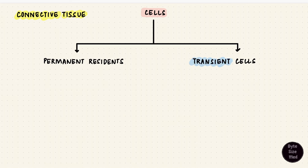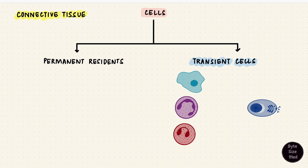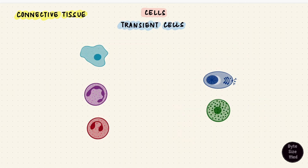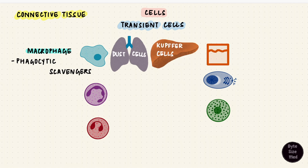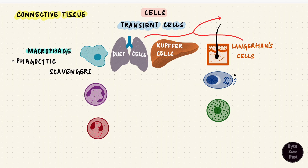The transient cells are usually immune cells — macrophages, neutrophils, eosinophils, plasma cells, and mast cells. Macrophages are phagocytic scavengers; they take up debris and foreign substances, and can have different names depending on their location. For example, dust cells in the alveoli of the lungs, Kupffer cells in the liver, Langerhans cells in the skin — these are all macrophages. Fixed macrophages are permanent residents, while wandering macrophages are transient cells — so macrophages could be fixed or transient.